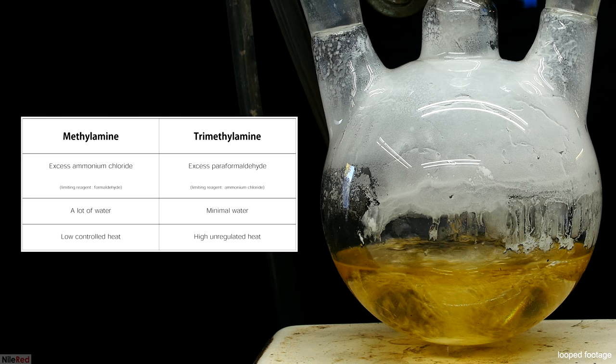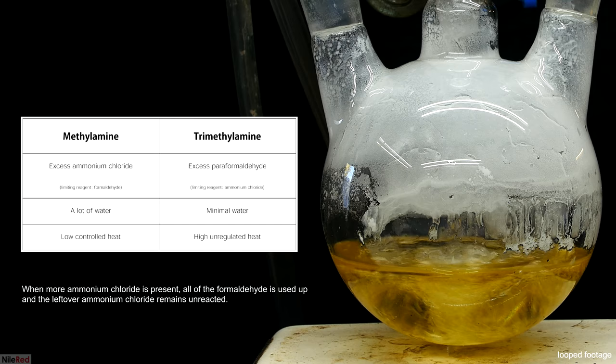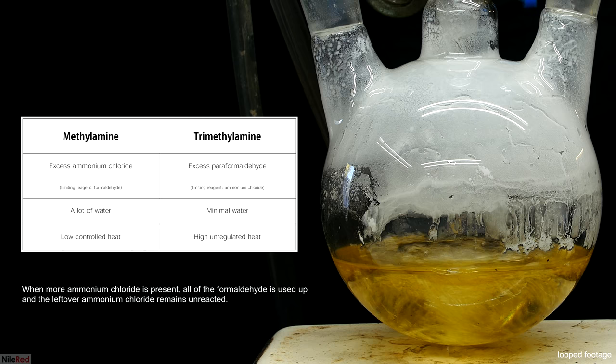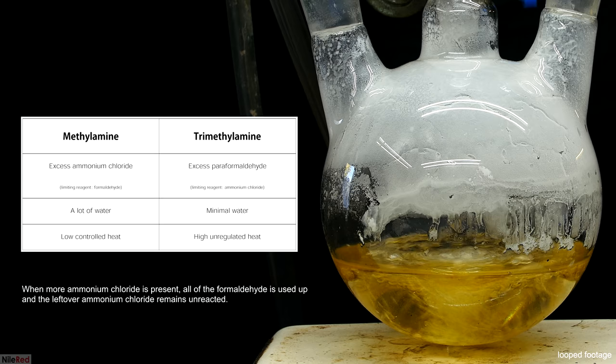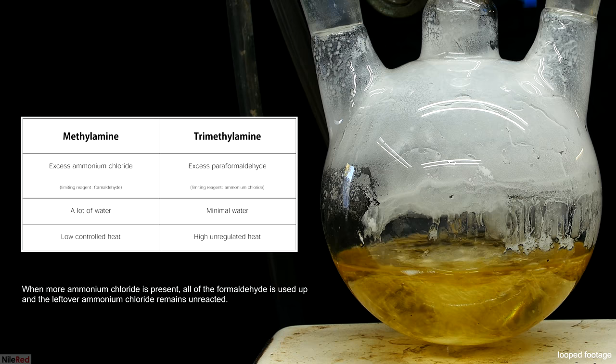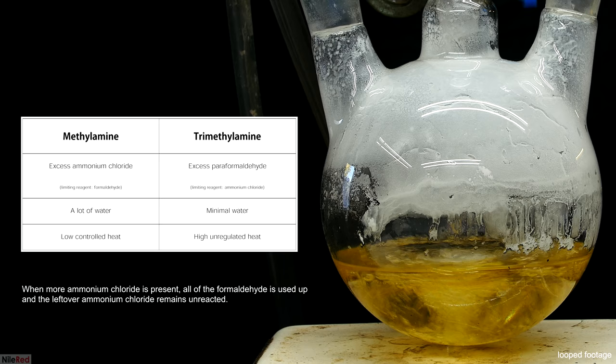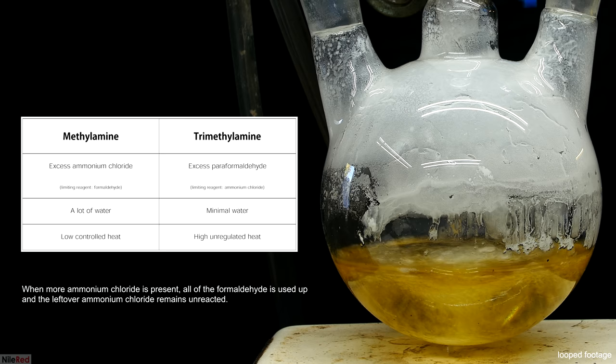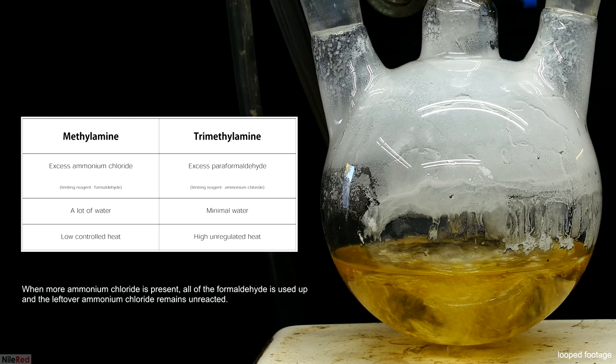By including a large excess of ammonium chloride, the formaldehyde is just more likely to react with the ammonium chloride than it is with the methylamine. Also, by keeping the heat low and using water to decrease the formaldehyde concentration, the reaction is slower, more controlled, and favors the formation of just methylamine. On top of this, excess water also breaks down formic acid that's formed.